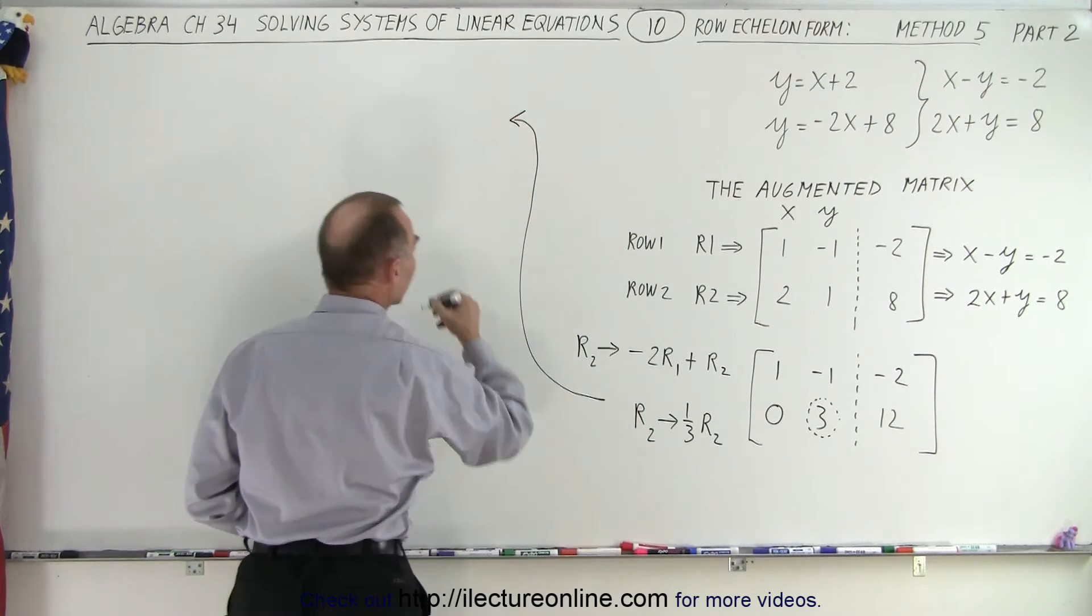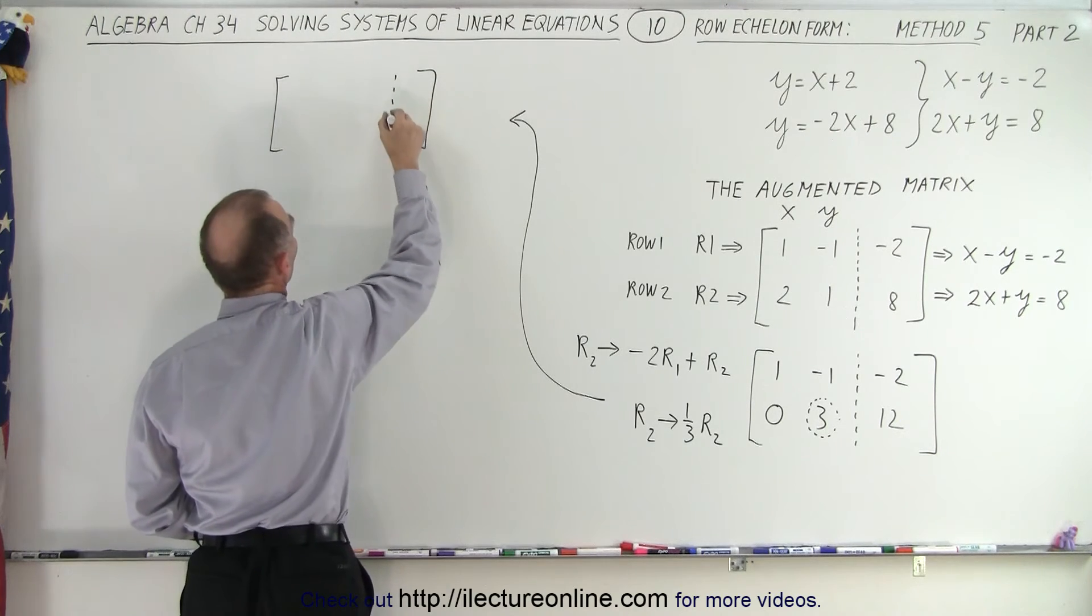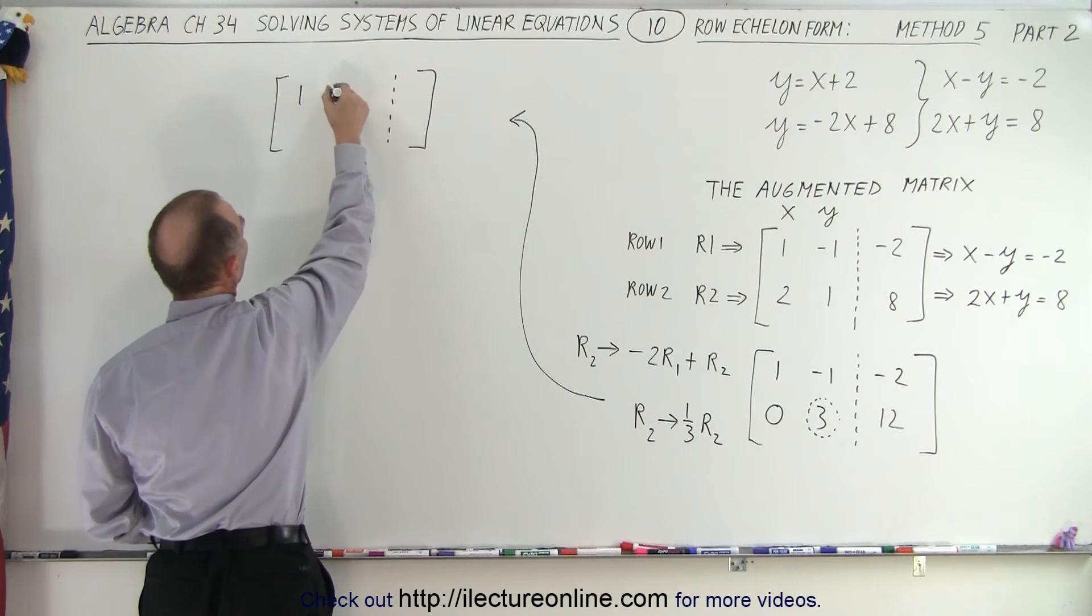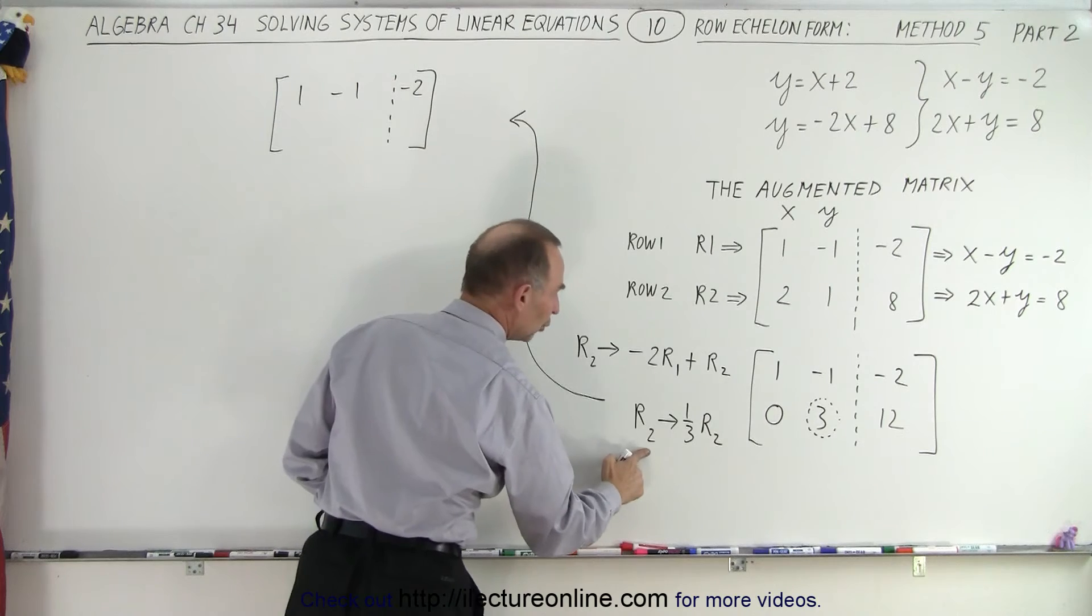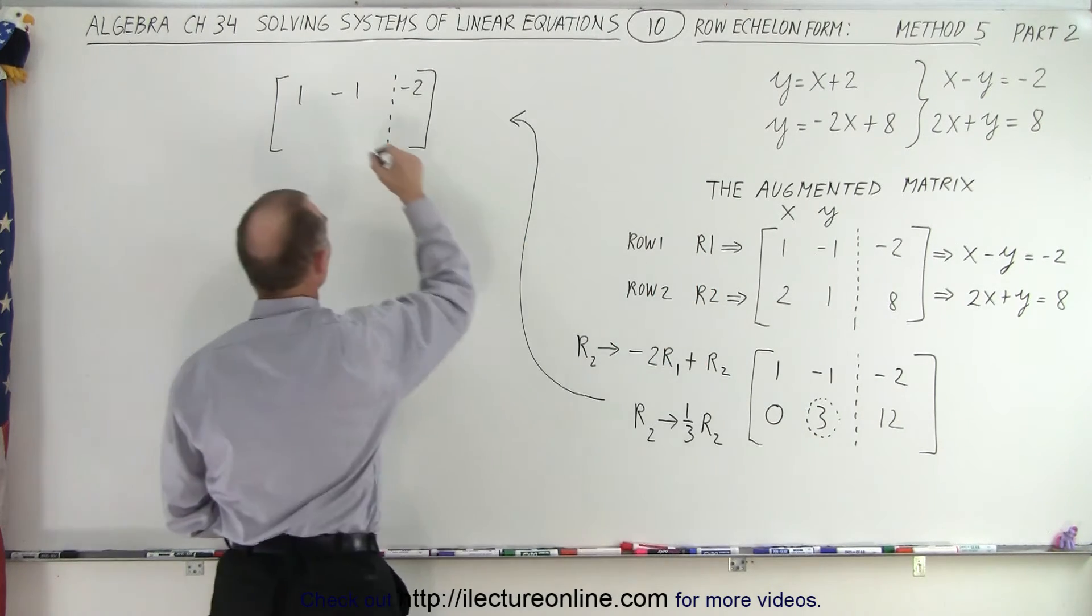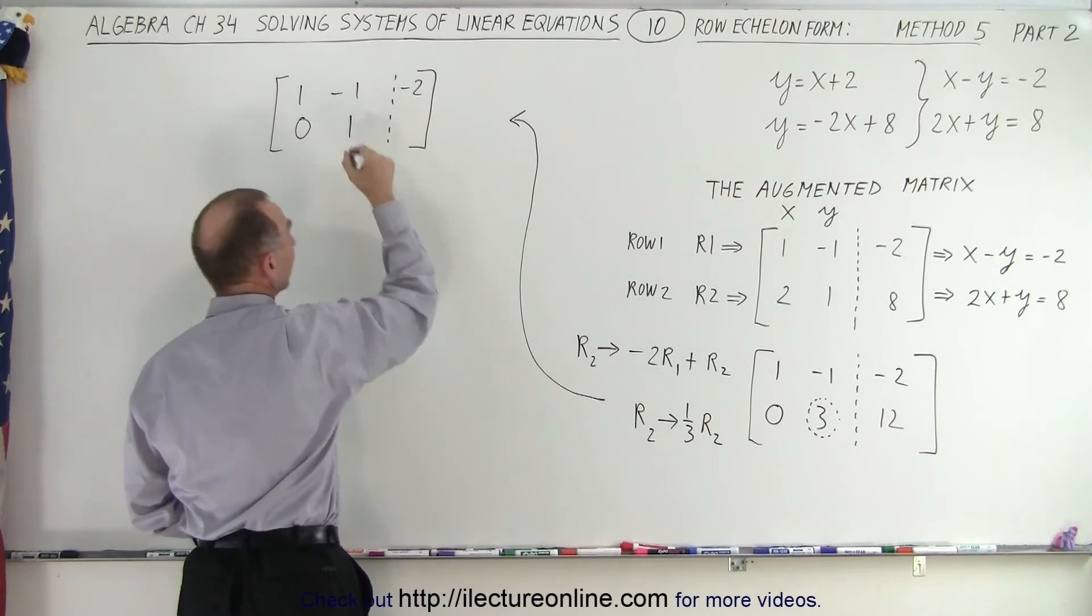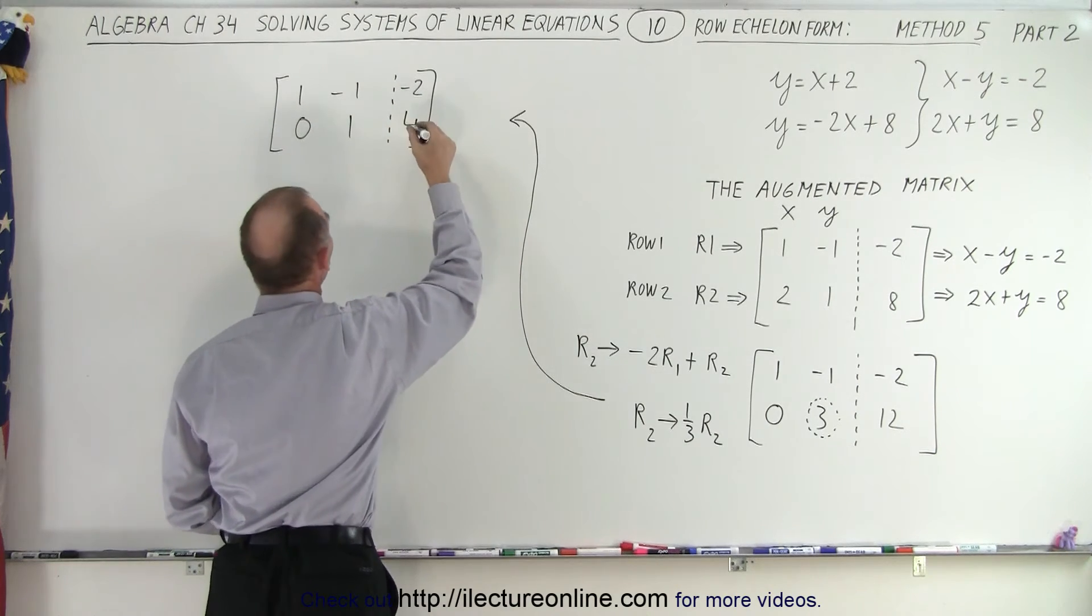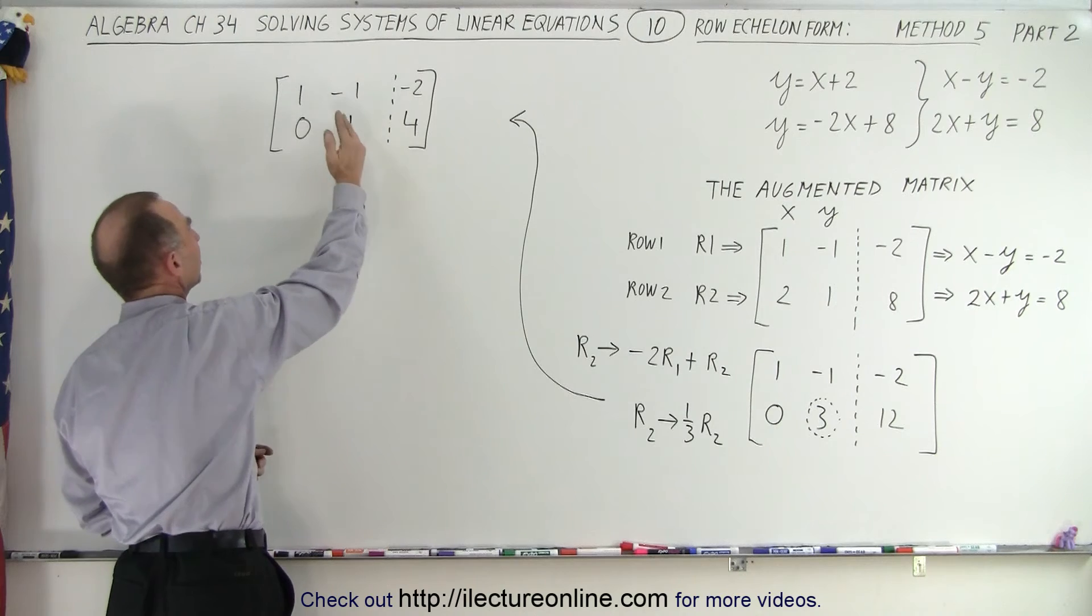So now my new augmented matrix will look like this. Notice I'm not changing r1, I'm only changing r2. So r1 stays the same: 1, -1, and -2. And r2 now becomes a third of everything in there. So 0 divided by 3 is still 0, 3 divided by 3 is 1, and 12 divided by 3 is equal to 4.